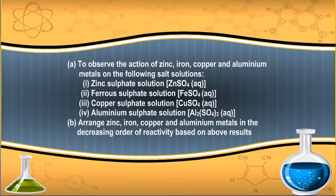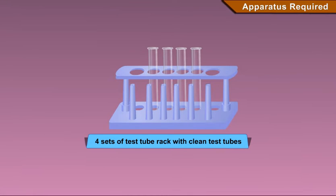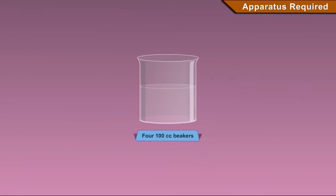Arrange zinc, iron, copper and aluminium metals in the decreasing order of reactivity based on above results. Apparatus required: 4 sets of test tube rack with clean test tubes, 400 cc beakers.